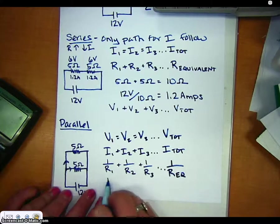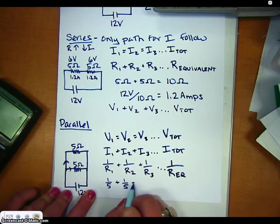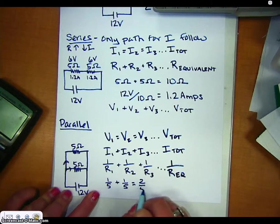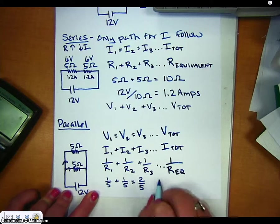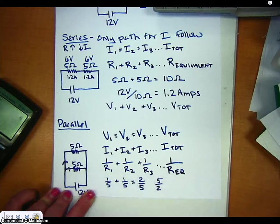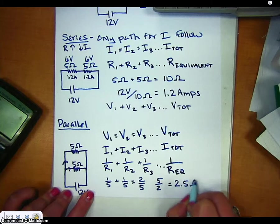So, in this case, I'm going to take 1 fifth plus 1 fifth, and that gives me 2 fifths. But it's the inverse, is the actual total, so I'd have to flip this upside down. So it'd be 5 divided by 2, which is equal to 2 and a half ohms.